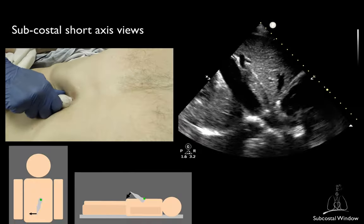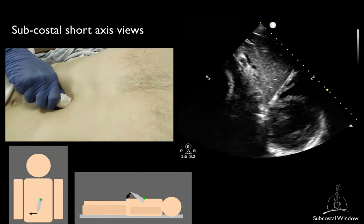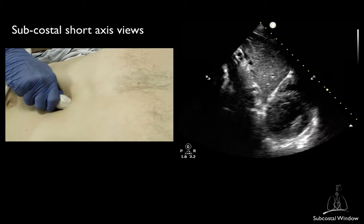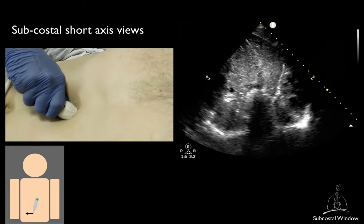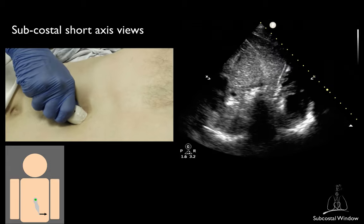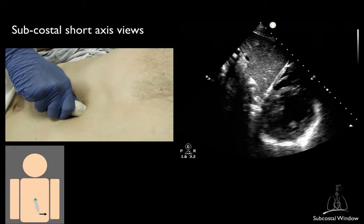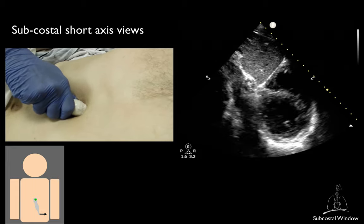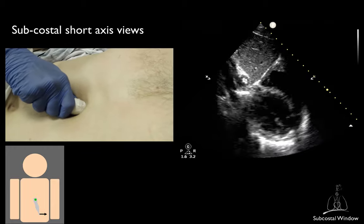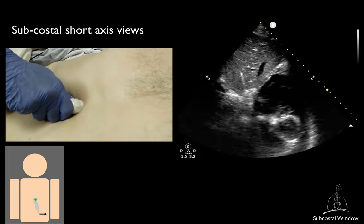By tilting the footprint towards the patient's left and rocking cephalad, you should be able to obtain the short axis of the left ventricle. By tilting the footprint even more to the patient's left, you will see the short axis at the apex level. If you then tilt the footprint towards the patient's right, you will get the short axis at the mid-papillary level, then the mitral valve level, and finally the right ventricular inflow-outflow.